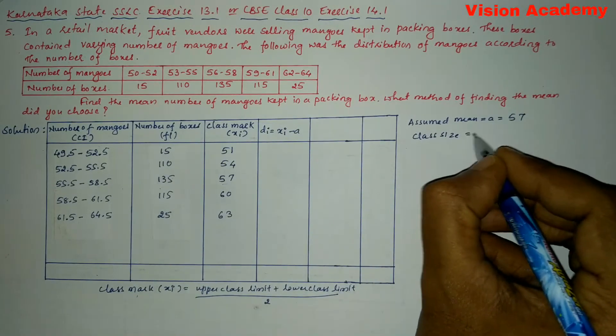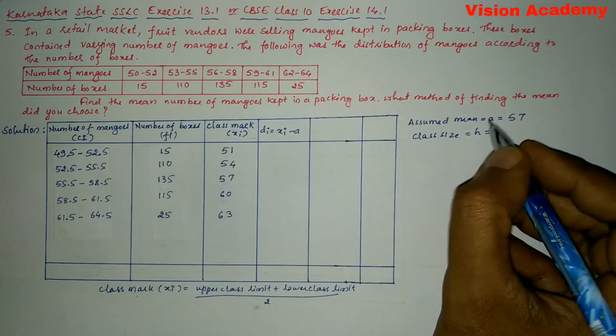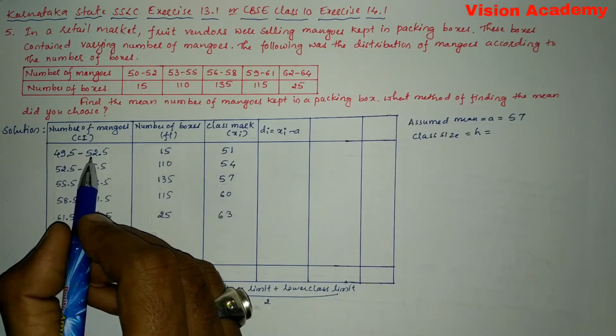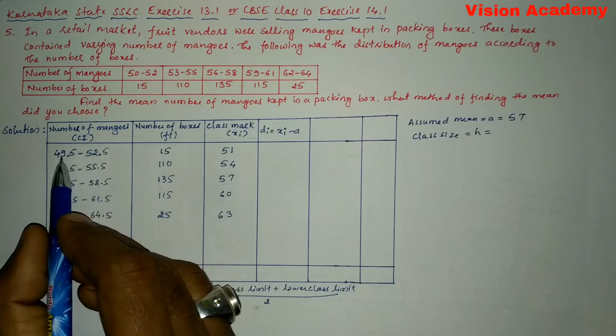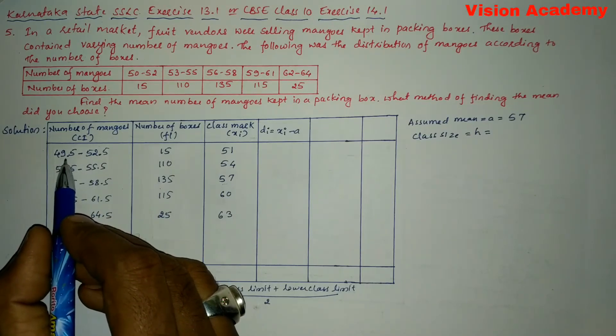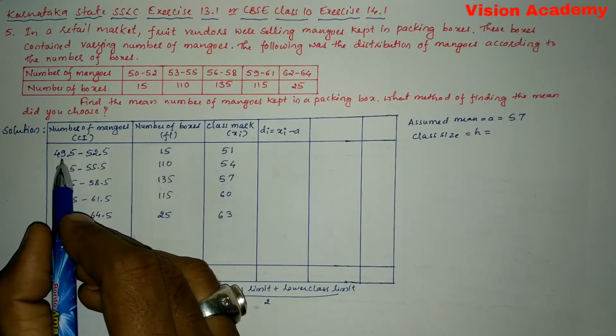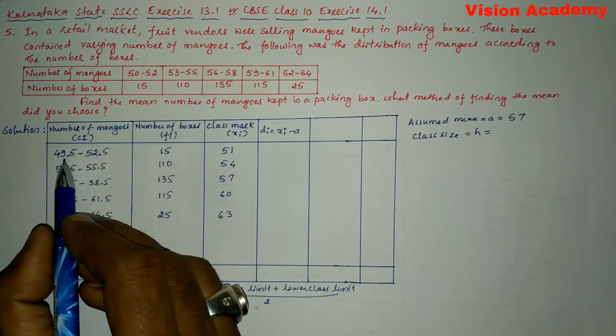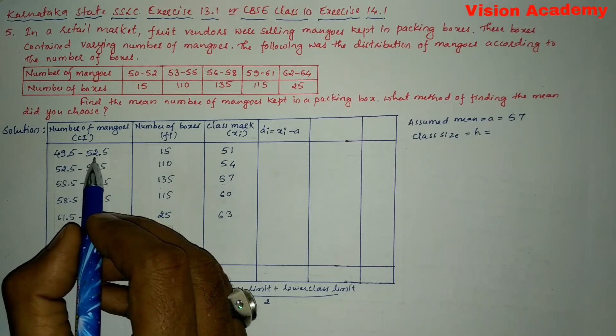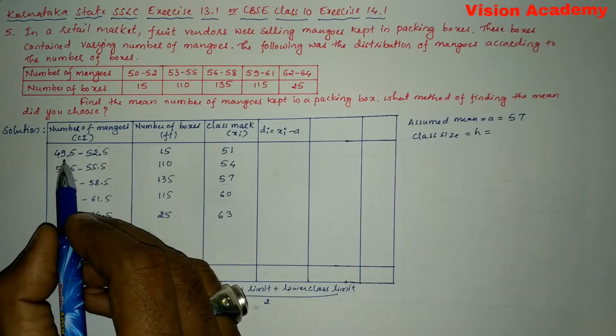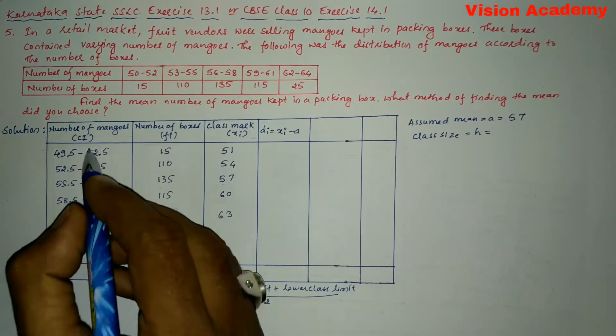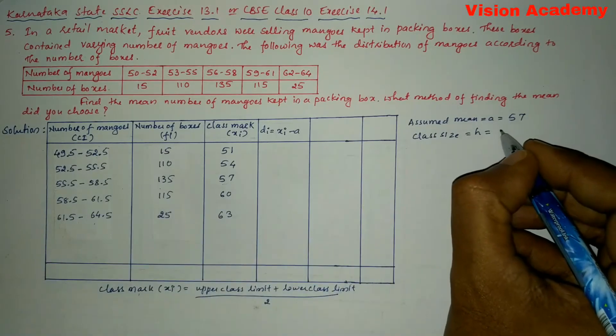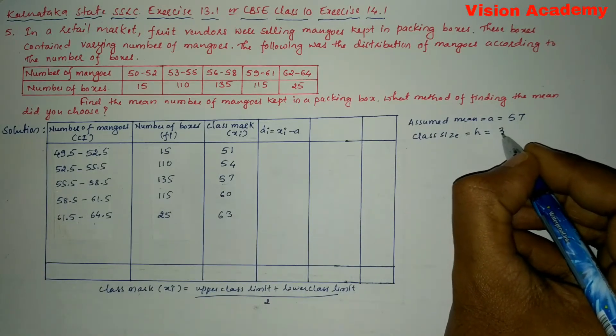Next we will write class size, which is denoted as h is equal to, here you can see the class sizes if I subtract the upper class limit and lower class limit then we are going to get difference. So that is upper class limit minus lower class limit, that is 52.5 minus 49.5 gives us 3. So here it is the common difference present. So here we will write h as 3.